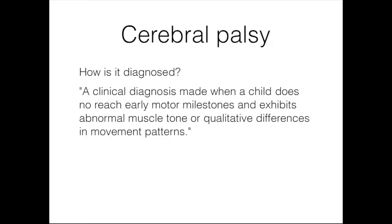However, many cases of cerebral palsy can be identified in children much younger, even at age six months or younger. It is important when trying to figure out a diagnosis of cerebral palsy that we differentiate from other conditions, atypical motor trajectories, and that transient dystonia that's often associated with prematurity. We have to make sure that we rule out a number of other diagnoses so that we know what we're really dealing with is cerebral palsy.